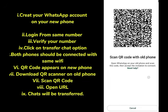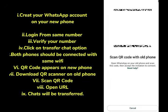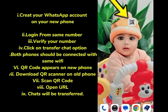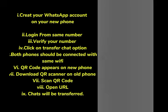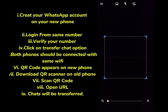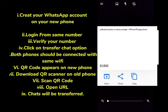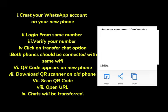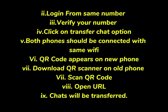When you click on Transfer Chat, a QR code will be shown on your new phone. Go to your old phone — you will need a QR scanner app. If you don't have one, download it from the store. Scan the QR code shown on your new phone. For this procedure, you need to have both phones connected to the same Wi-Fi network.